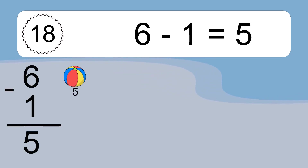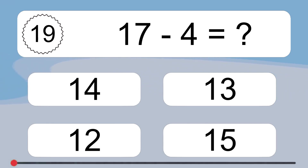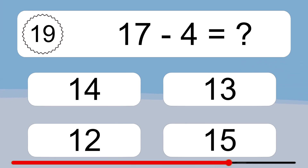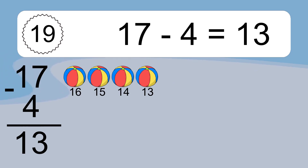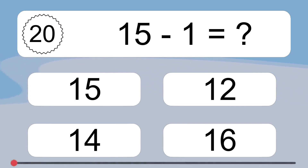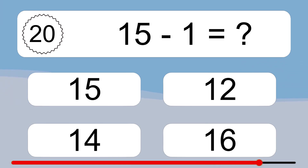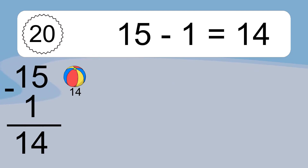6 minus 1 equals 5. Let's count it: 5. 17 minus 4 equals what? 17 minus 4 equals 13. Let's count it: 16, 15, 14, 13. 15 minus 1 equals what? 15 minus 1 equals 14. Let's count it: 14.